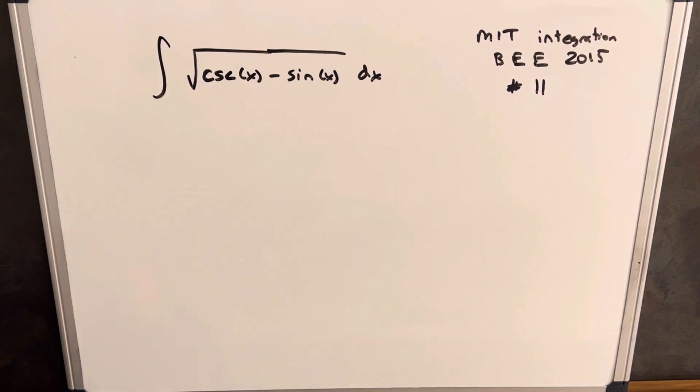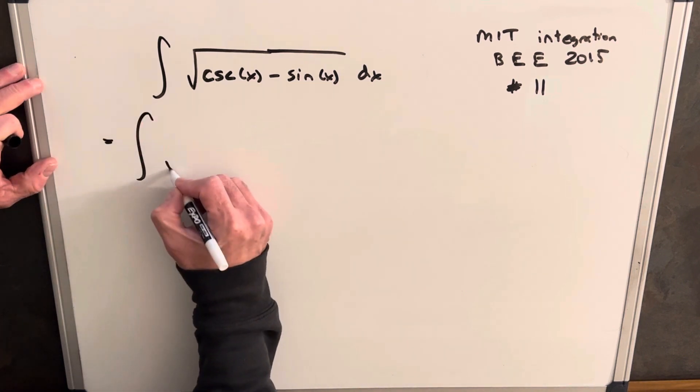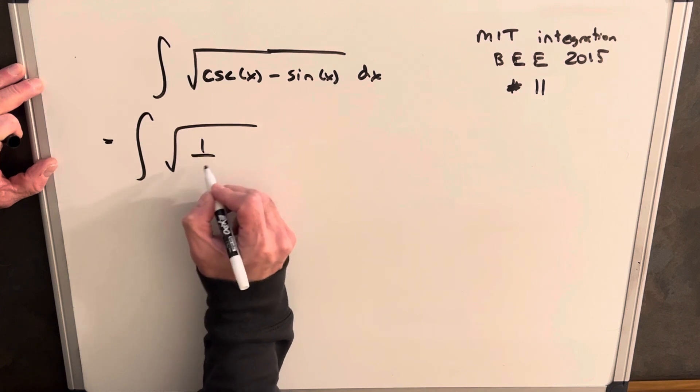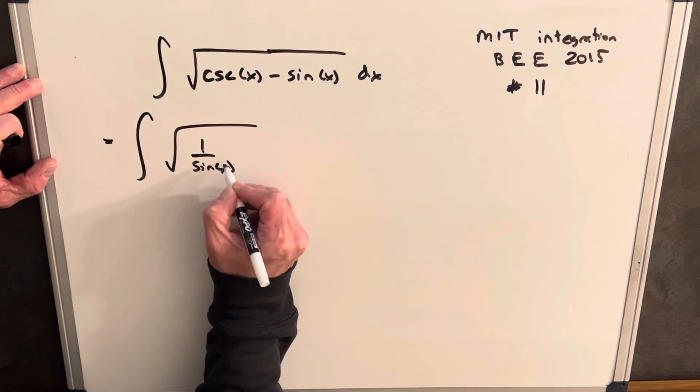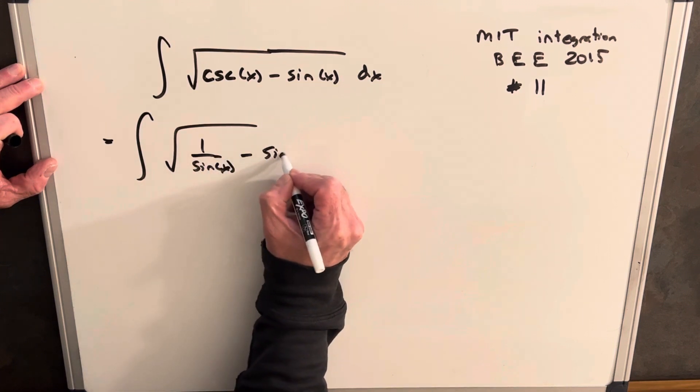Okay, for my first step, what I want to do is change that cosecant into 1 over sine. So we'll rewrite this as 1 over sine x minus sine x dx.